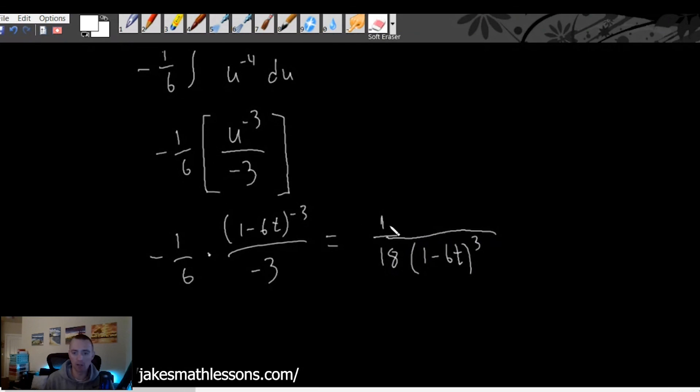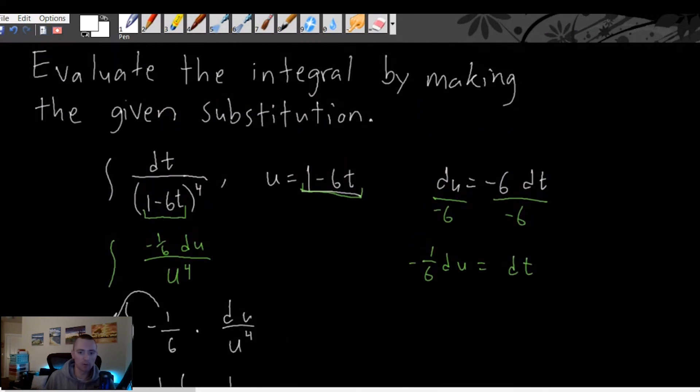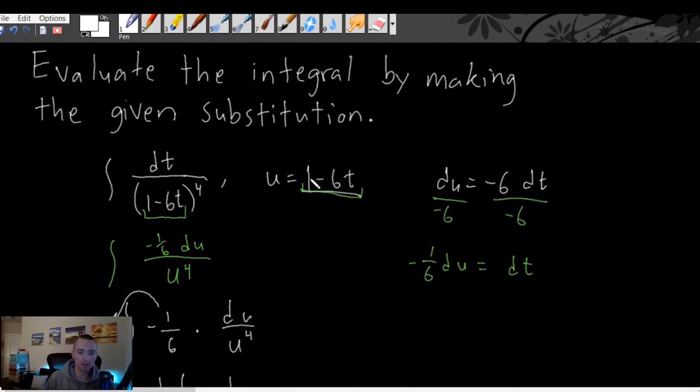So basically we're going to end up with one over 18 times (1 minus 6t) all to the third power. I should say actually we need one more piece here. We do need to add on a plus C. So this plus C now is going to give us the indefinite integral to this function that we originally started with based on this substitution that they gave us.